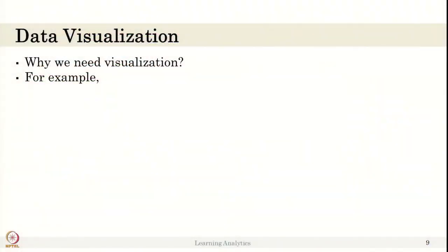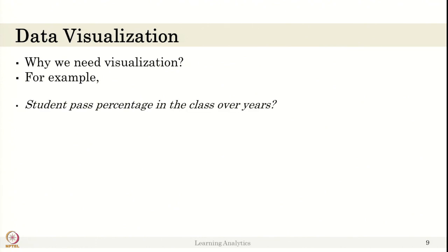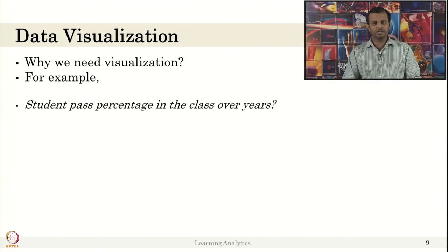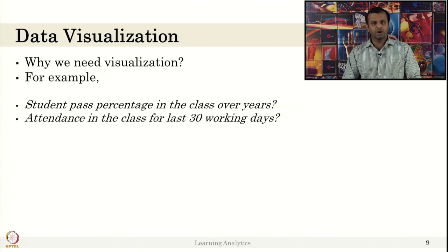I hope you have answers for the research question you decided and a similar set of data processing steps — what data you have to prepare and how to represent it. The most important part is why we need data visualization. For example, if I want to show students' pass percentage in a class over years, we can use a bar graph or line chart to show the pass percentage from 2015 to 2020. Or attendance in the class for the last 30 working days — you can plot working days on the x-axis and attendance, and see if attendance varies, reduces, or increases. This kind of trend is shown here.